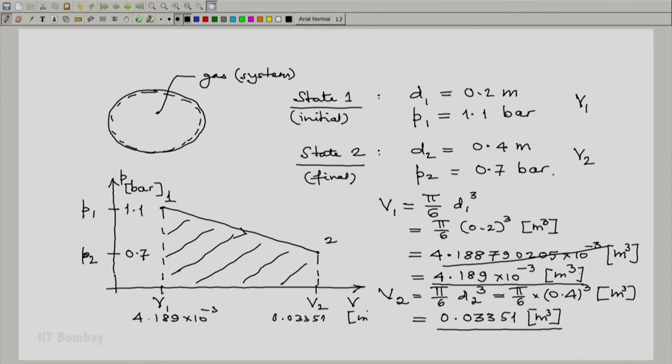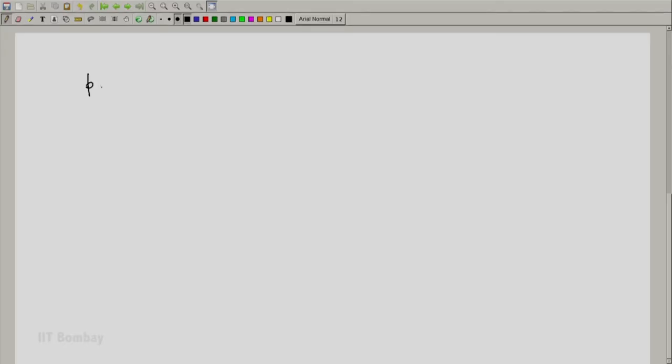The next thing is to note that the pressure-volume relation is indicated to be linear. That means the locus is known, indicating this is a quasi-static process—not just because it's linear, but because there's a neat relationship provided. And because it's a quasi-static process...